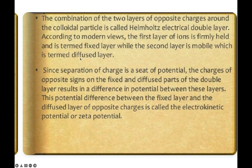According to modern views, the first layer of ions is firmly held and is called the fixed layer, while the second layer is mobile and is called the diffuse layer. The separation of charges of opposite signs between the fixed and diffused parts of the double layer causes a difference in potential between these layers. This potential difference between the fixed layer and the diffuse layer of opposite charges is known as the electrokinetic potential or zeta potential.